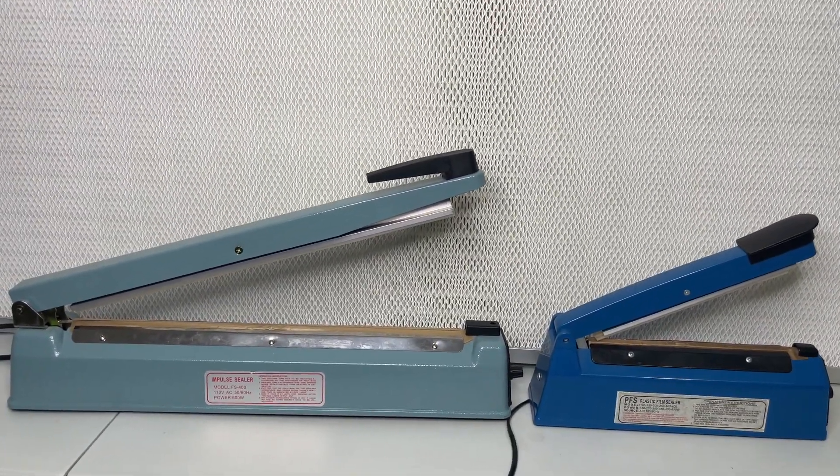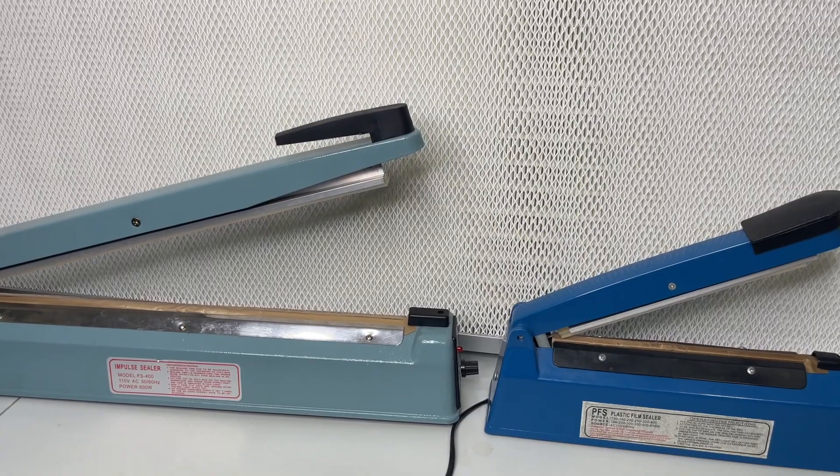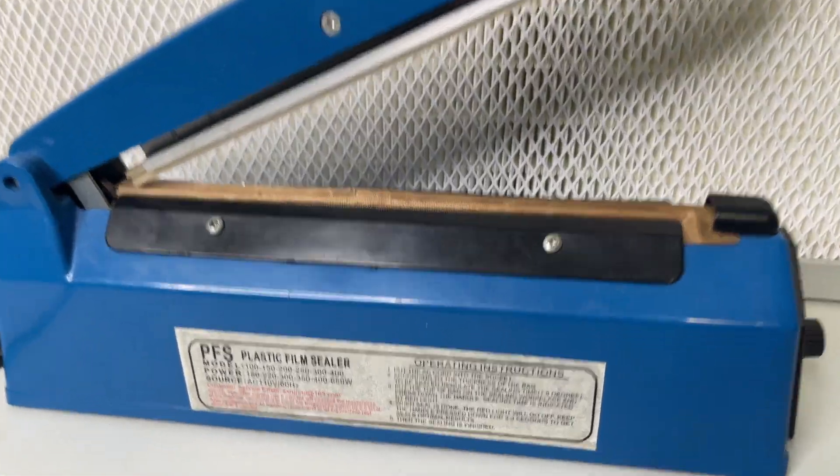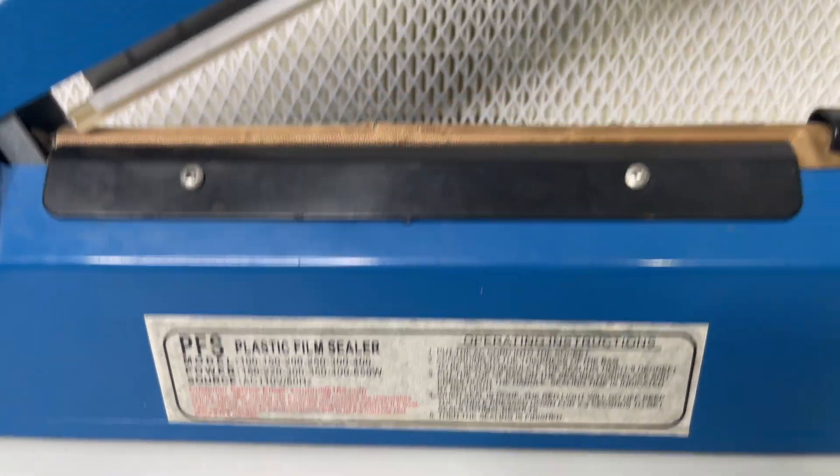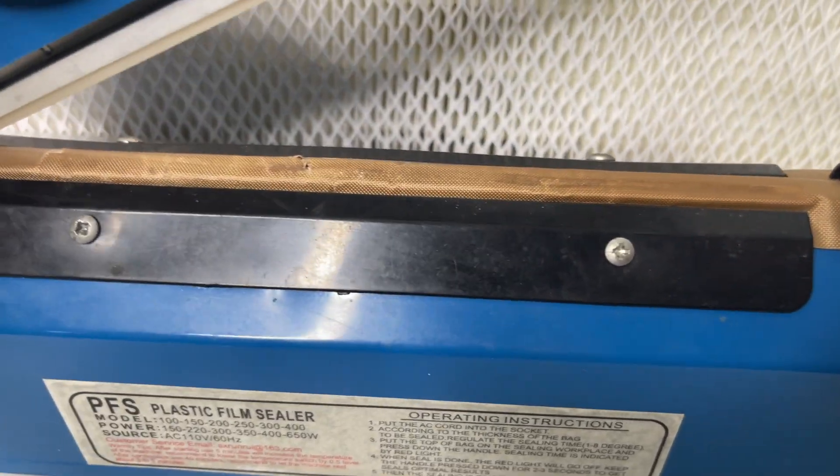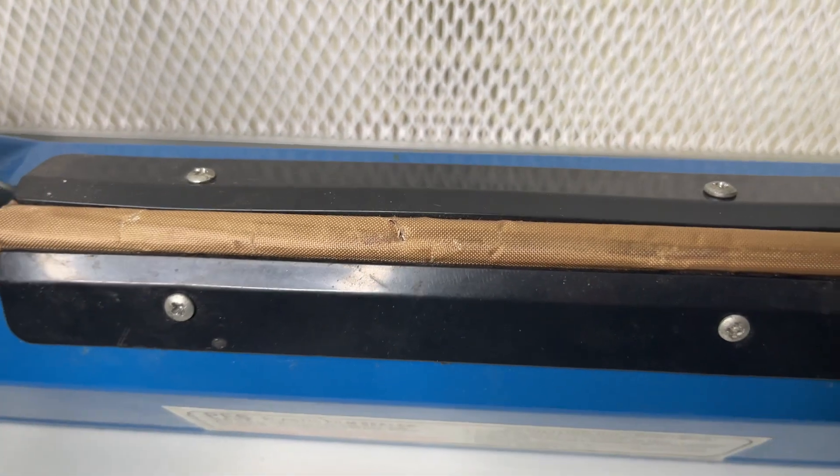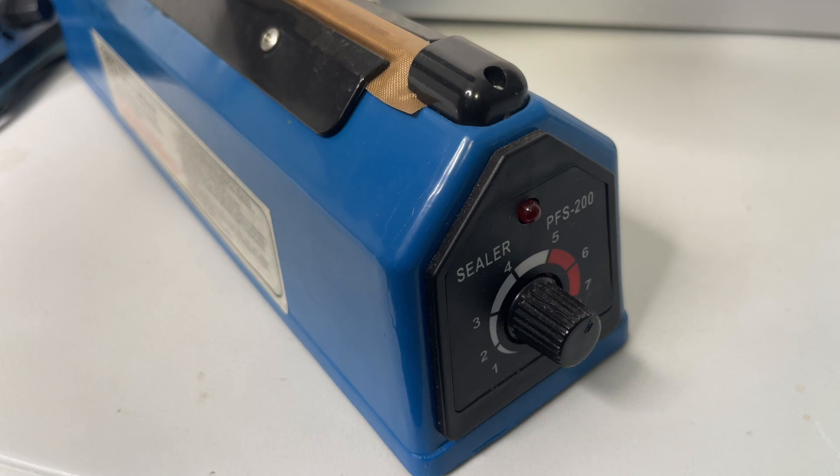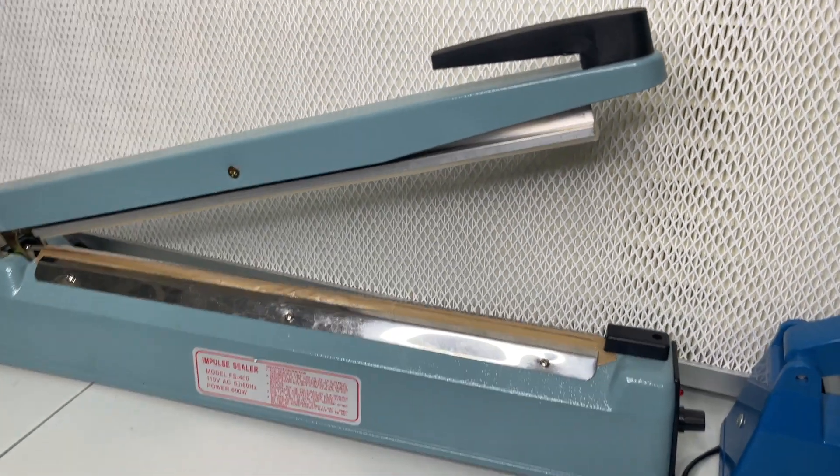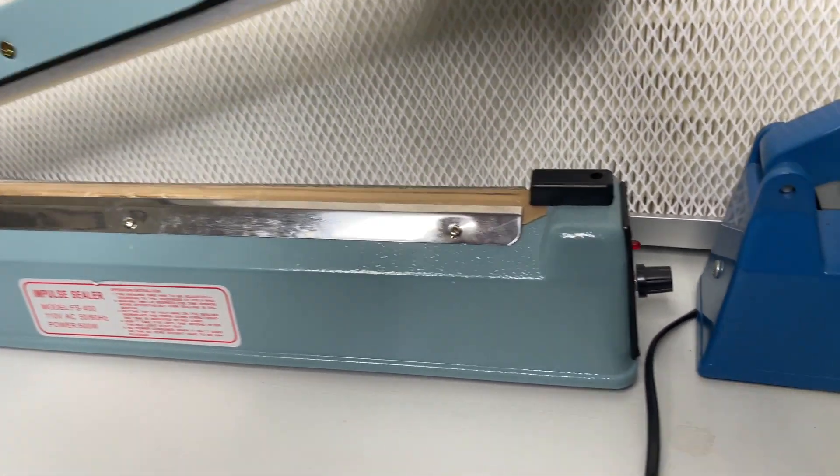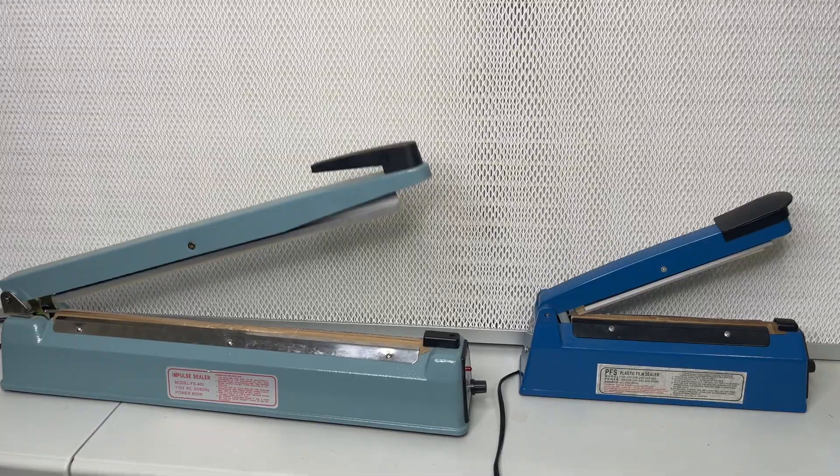If you want to grow mushrooms in filter patch bags, there's really no way around getting a quality impulse sealer. I started off using this small impulse sealer and the track started coming off, but I ended up fixing it by unscrewing those screws. But it ended up being a little bit too small for five pound substrate bags, so I ended up getting this one which is the perfect size and it's higher quality.